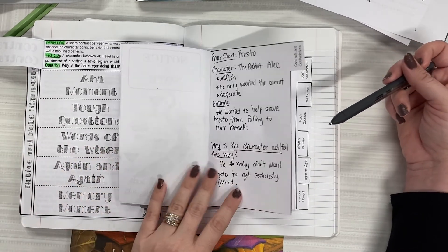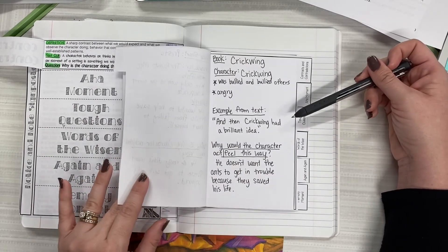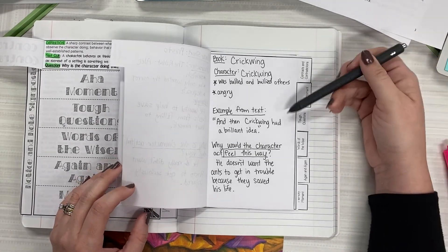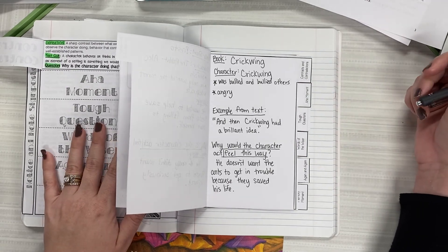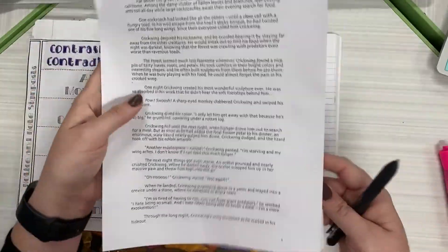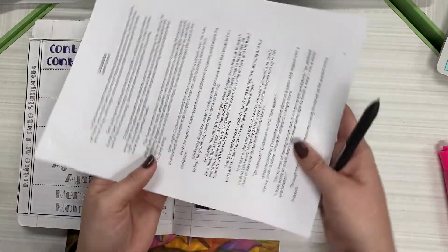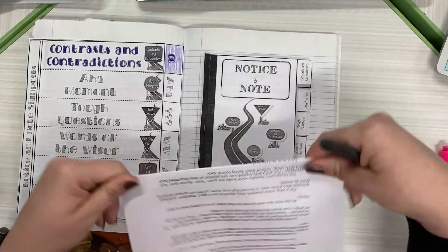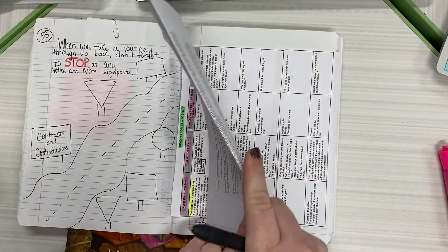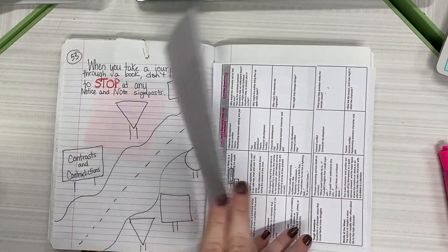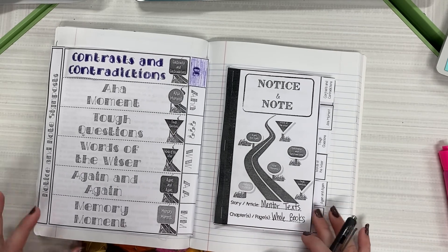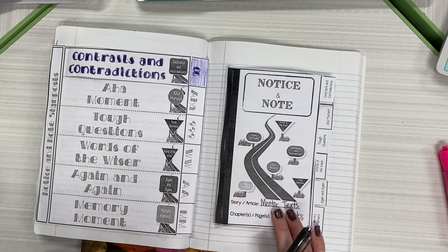Today we modeled by watching a Pixar short called Presto. We then did more example practice using the book Crickwing. That's your mentor text. We're going to continue with this pattern to keep going through the different signposts that we will cover for notice and note. As we are going through these signposts, you are going to have a new mentor text for each day. Please make sure that you keep these in a safe spot. What I suggest is that you fold your mentor text and as we complete them, you are going to keep these in your notebook. Take a picture of all of the work that we have completed today, including both pages of your contrast and contradictions and submit to our assignment.